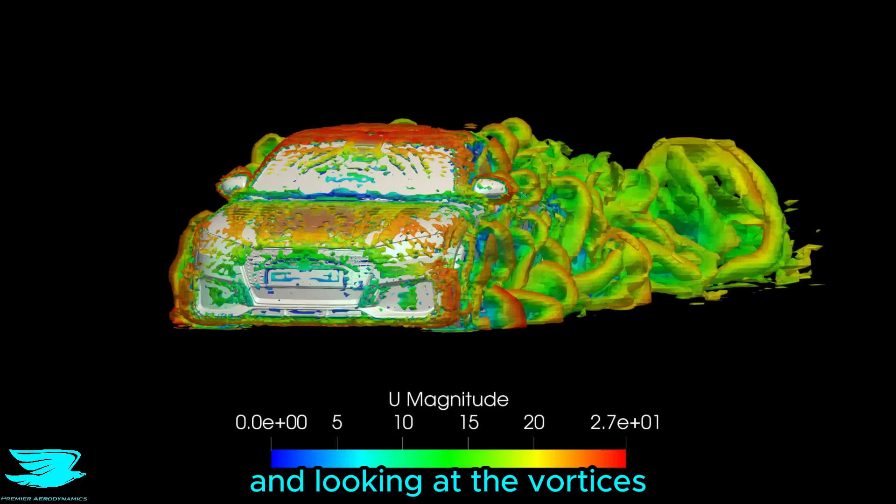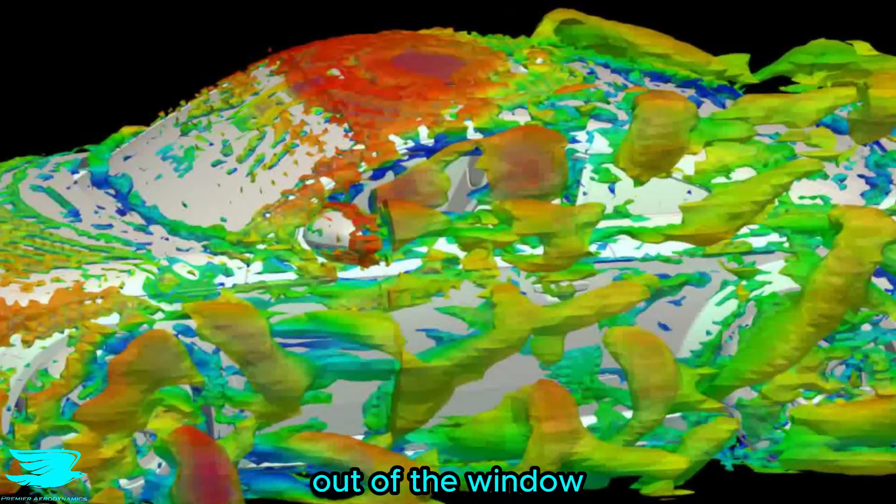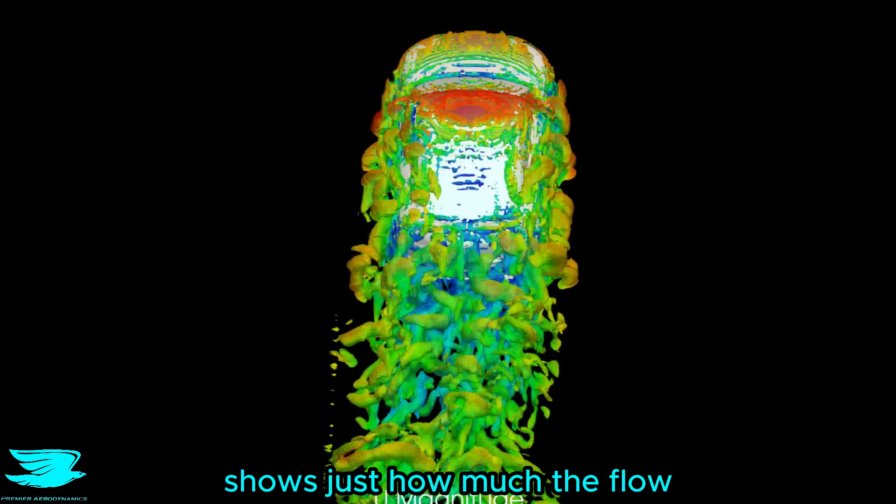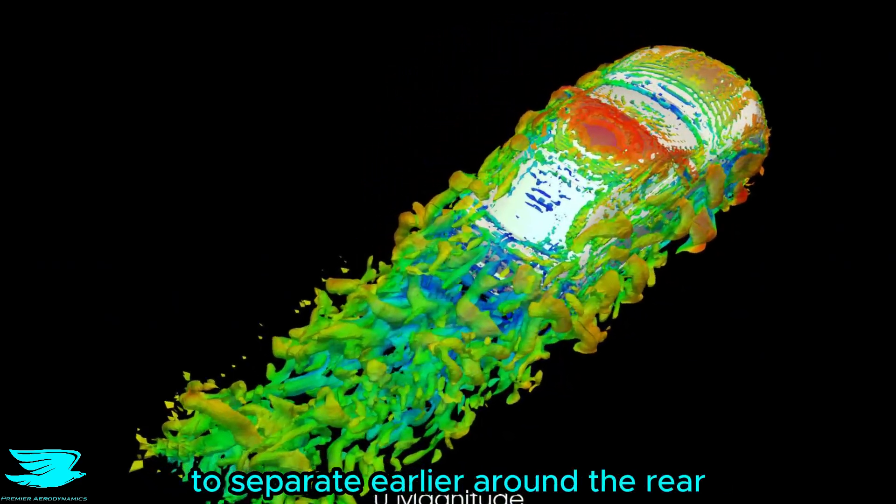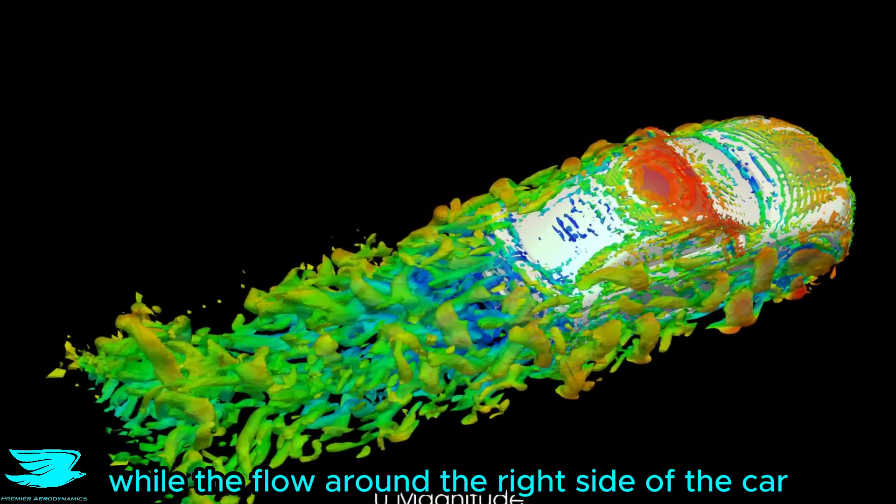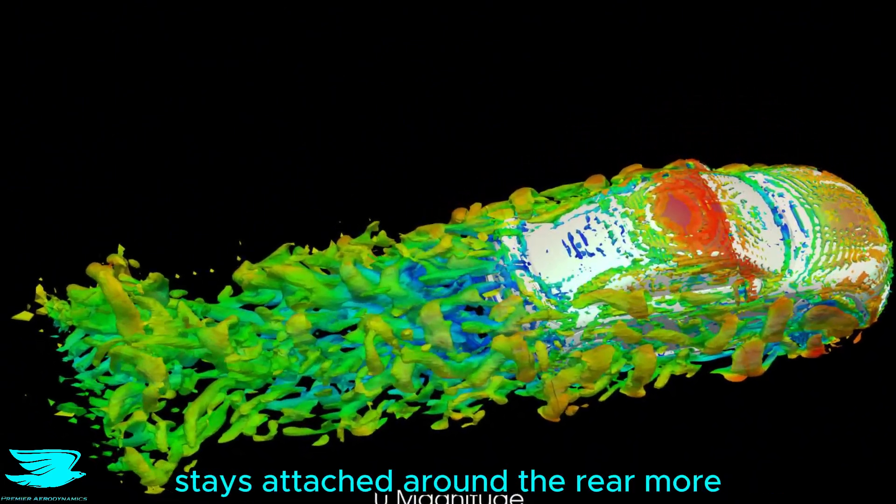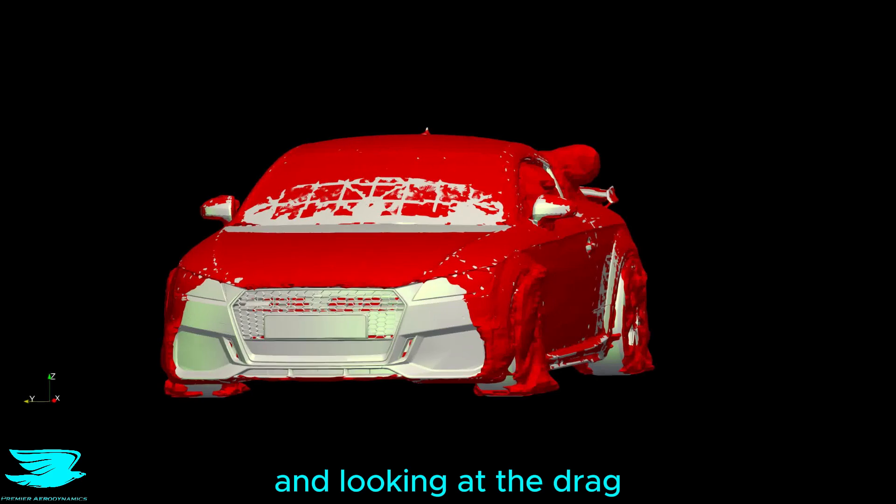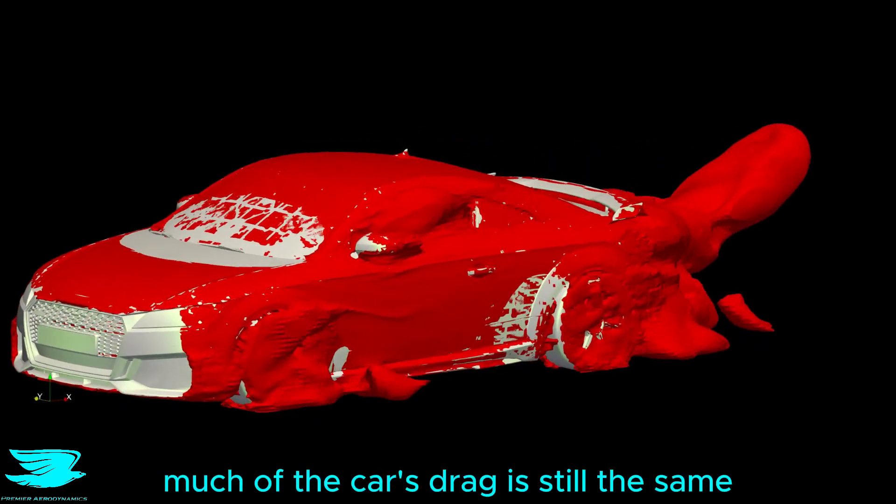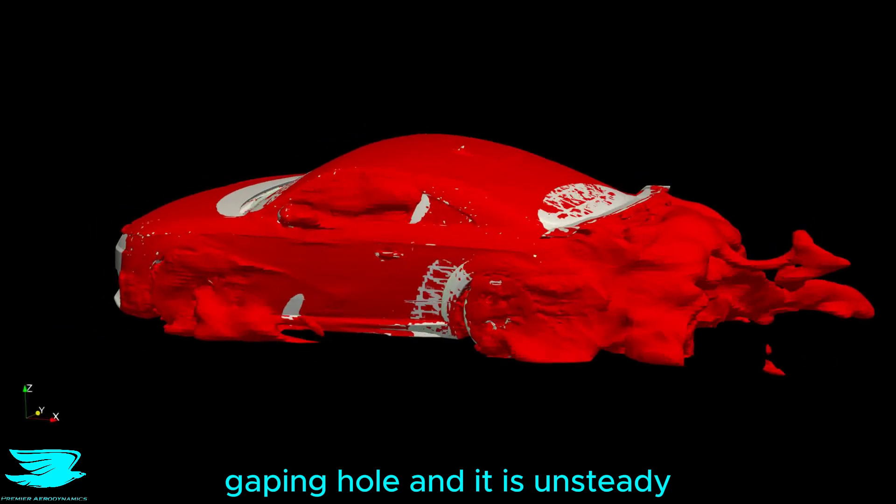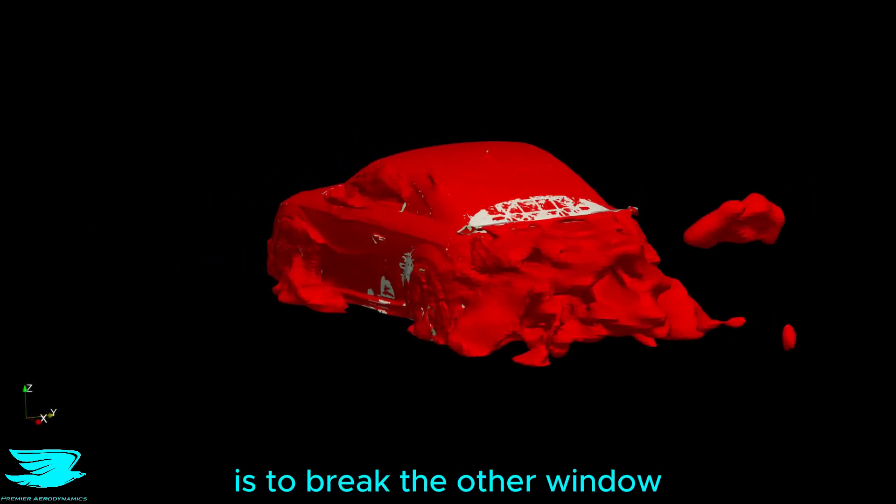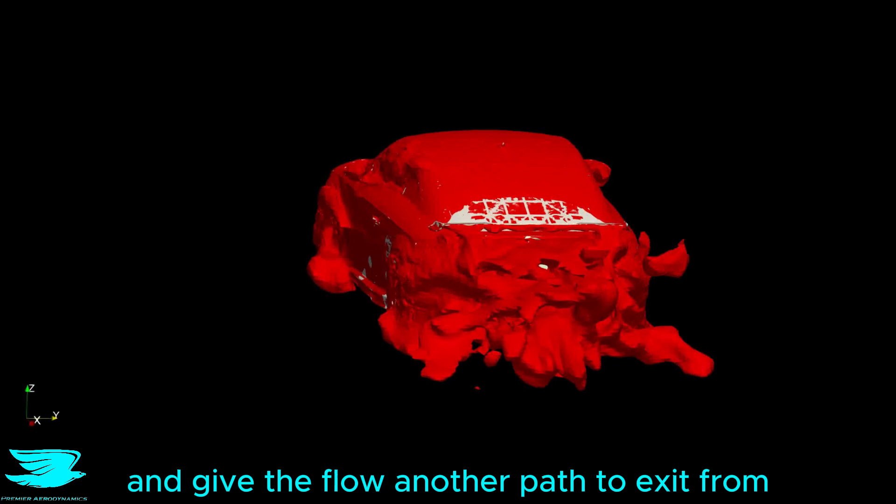And looking at the vortices, we do see huge ones coming out of the window, and this rear view shows just how much the flow skews to one side. That results in the flow around the left side of the car to separate earlier around the rear, while the flow around the right side of the car stays attached around the rear more. And looking at the drag, much of the car's drag is still the same, but we obviously get so much more out of that gaping hole, and it is unsteady. A way to reduce that unsteadiness is to break the other window and give the flow another path to exit from.